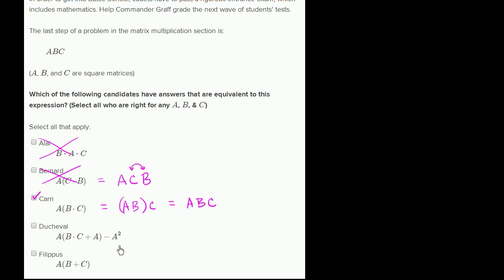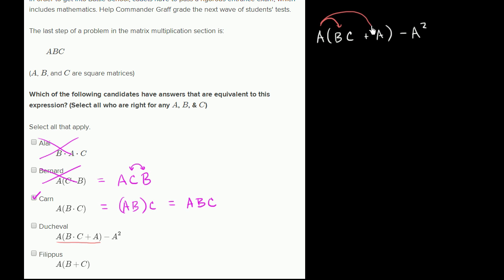Now Deuceval — this looks like a bit of a crazy expression, but let's think it through. Matrix multiplication, as long as you keep the order right, the distributive property does hold. So we have A times (B times C) plus A, minus A squared. You can actually distribute this A — I encourage you to prove it yourself, maybe using some two-by-two matrices. This part is going to be A times B times C, plus A times A, which we could write as A squared, and then we subtract A squared.